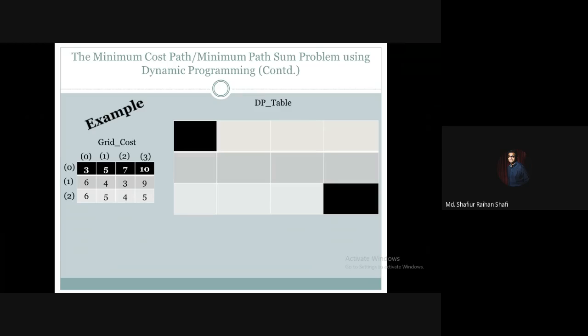This is the grid cost matrix with cell indexing starting at zero for both i and j. The grid cost matrix dimension is 3 rows by 4 columns, so the DP table dimension is the same: 3 rows by 4 columns. Now we need to fill out the DP table. The first row, first column...